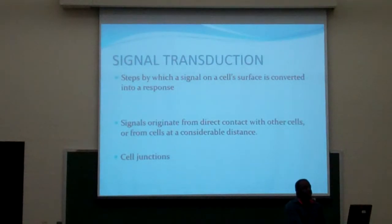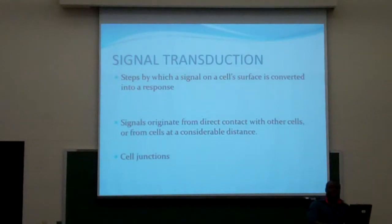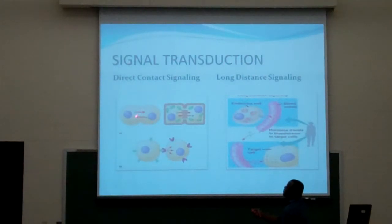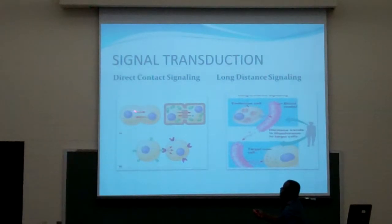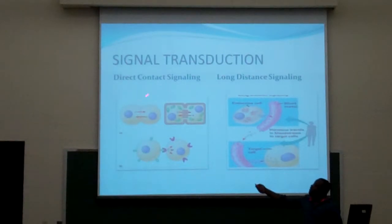Now, cells have developed different ways to receive signals from external sources. One of these is the cell junction. Cell junction refers to proteins that surround the cytoplasmic cell, and they are supposed to be able to receive the signals from external sources or some cells. To the left here is the plant cell, and that's the animal cell. You can see this space right here is the cell junction for an animal cell. You can see that the signals can diffuse through the cytoplasmic form from one cell to the other.